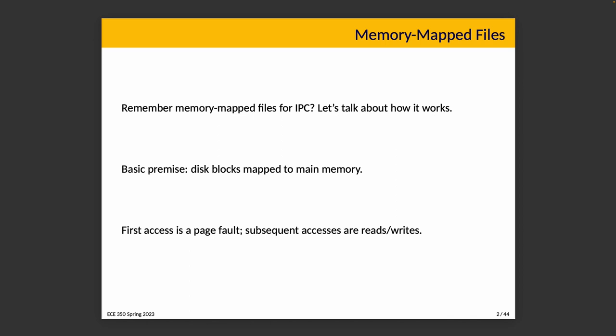The basic premise is that disk blocks for the file are mapped to memory. If a chunk of the file is referenced that is not in memory, we treat that as a page fault, and a page-size piece of the file is brought into memory. Other accesses are then just memory reads and writes on the data in memory, without going to disk. This resembles loading the whole file into memory, where data is read from disk and some of it might eventually get swapped out.